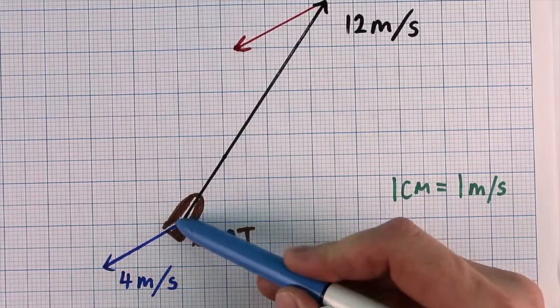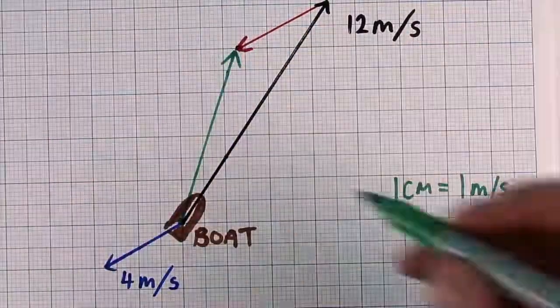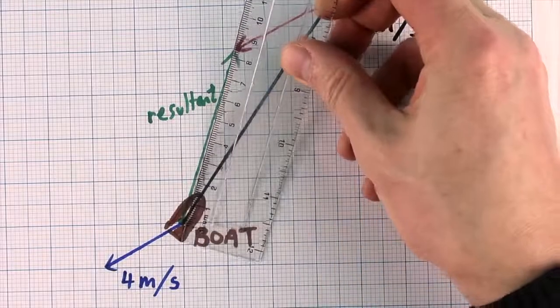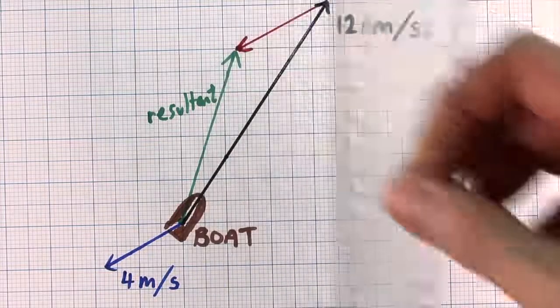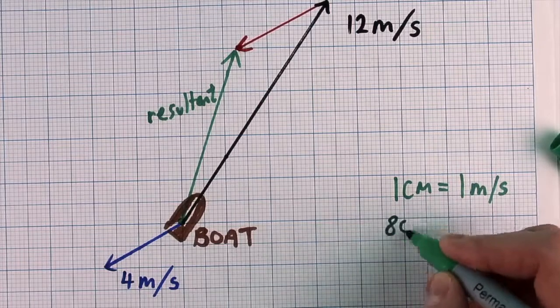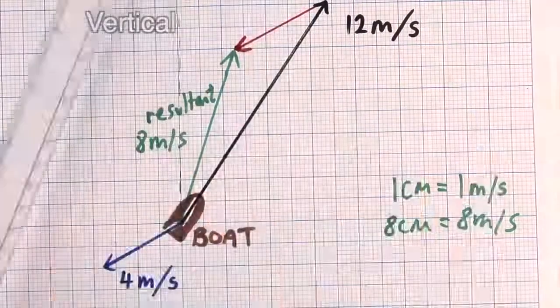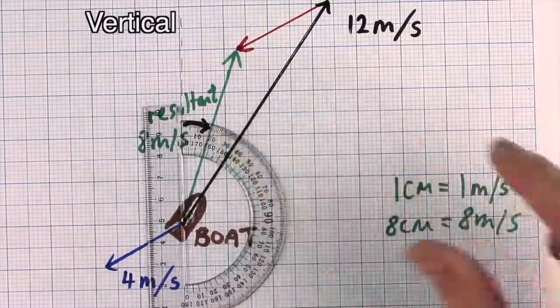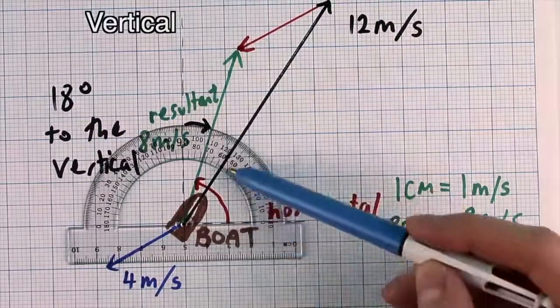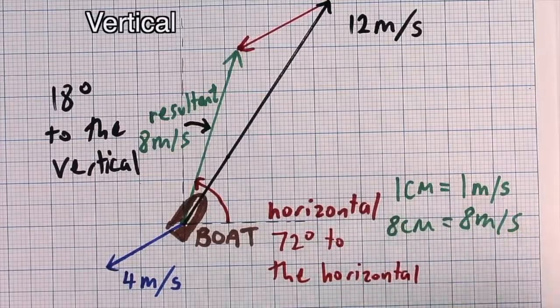Draw the resultant vector from the tail of the first arrow to the tip of the second arrow. Using my ruler, I can see the resultant vector is 8 centimeters long. It's a scale of 1 centimeter equals 1 meter per second, so 8 centimeters long means a velocity of 8 meters per second. Using my protractor, I can see the direction is 18 degrees to the vertical, or 72 degrees to the horizontal. The examiner might ask for you to quote how many degrees to either the vertical or the horizontal.